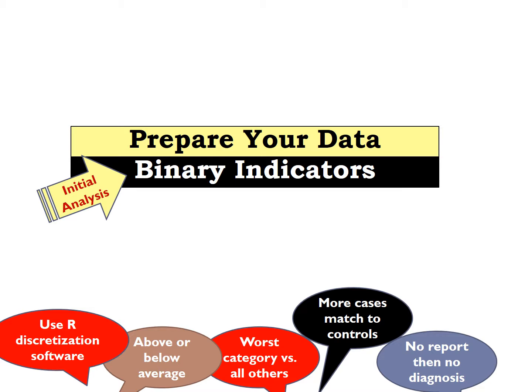Binary indicators are needed because we want to increase the number of matches between cases and controls. If we have a large number of categories in each variable, as the number of categories increases, the number of strata increases and the number of data points that fall into each stratum decreases — so we will soon run out of data. The binary variable assures us that most of the cases are matched to controls. Once the analysis is done, this process can be repeated for non-binary data to see if the analysis is sensitive to the levels of the variable.